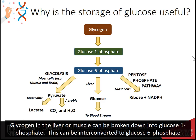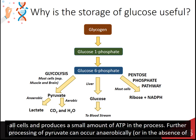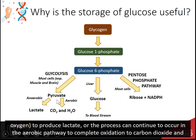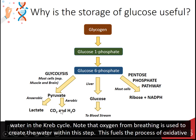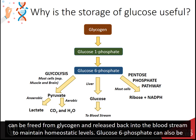Glycogen in the liver or muscle can be broken down into glucose-1-phosphate. This can be interconverted to glucose-6-phosphate, which is readily used in many cellular processes. The process of glycolysis, or the breakdown of glucose into pyruvate, occurs in all cells and produces a small amount of ATP. Further processing of pyruvate can occur anaerobically to produce lactate, or the process can continue in the aerobic pathway to complete oxidation to carbon dioxide and water in the Krebs cycle. This fuels oxidative phosphorylation within the mitochondria and produces 36 molecules of ATP per glucose. Within the liver, glucose can be freed from glycogen and released back into the bloodstream to maintain homeostatic levels.